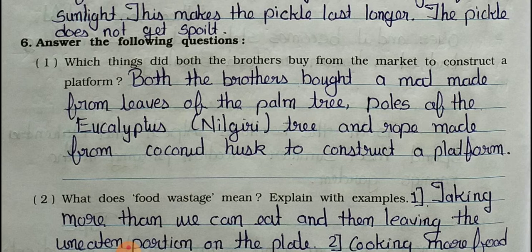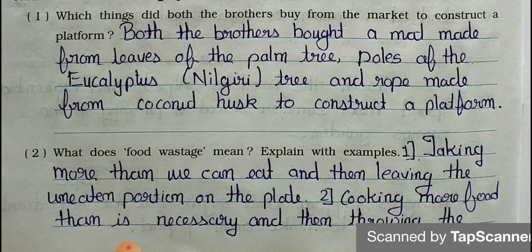Main question 6, answer the following questions. Question 1: Which things did both the brothers buy from the market to construct a platform? Answer: Both the brothers bought a mat made from leaves of the palm tree, poles of the eucalyptus (nilgiri) tree, and rope made from coconut husks to construct a platform.